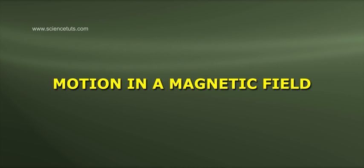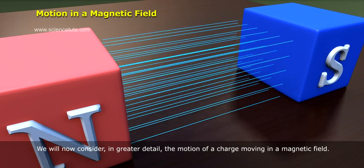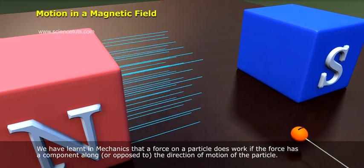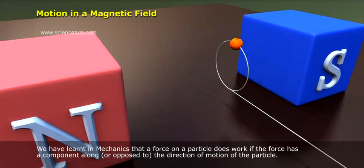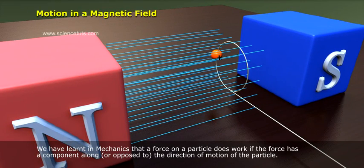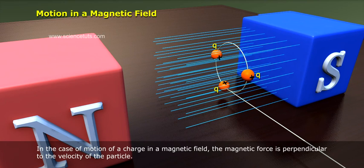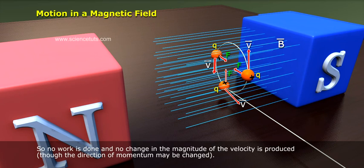Motion in a magnetic field. We will now consider in greater detail the motion of a charge moving in a magnetic field. We have learned in mechanics that a force on a particle does work if the force has a component along or opposed to the direction of motion of the particle. In the case of motion of a charge in a magnetic field, the magnetic force is perpendicular to the velocity of the particle, so no work is done and no change in the magnitude of the velocity is produced, though the direction of momentum may be changed.